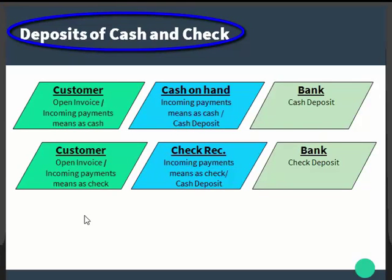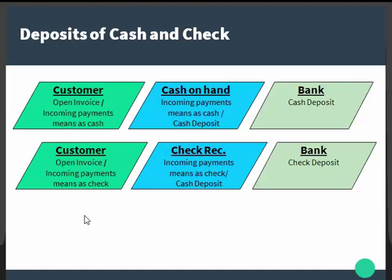Next is the deposit of cash and checks. If you take cash from your cash register or checks from your check drawer and bring them to your bank, you can use the deposit transaction to post this transfer. In the incoming payment, the customer account is credited and the cash on hand account is debited. When the deposit is made, the cash on hand account is credited and the bank account is debited. For a check deposit, the incoming payment credits the customer account and debits the checks received account; when the deposit is made, the checks received account is credited and the bank account is debited.